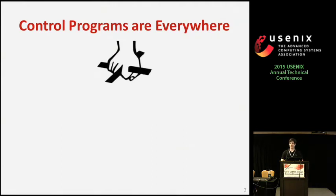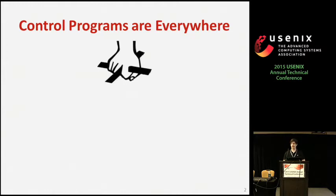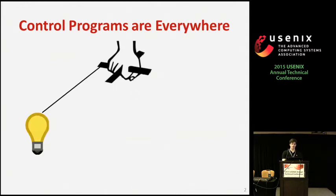We're particularly interested in finding bugs in control programs, and they're quite common these days. We're seeing control programs used to control home automation systems, software-defined networks, the internet of things. They tend to have a similar structure where there's some code executing on a centralized controller that orchestrates the behavior of a disparate set of devices.